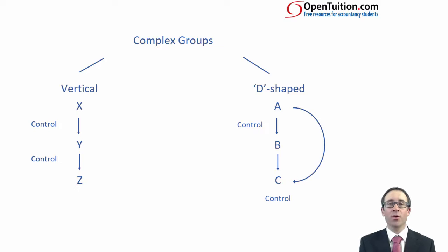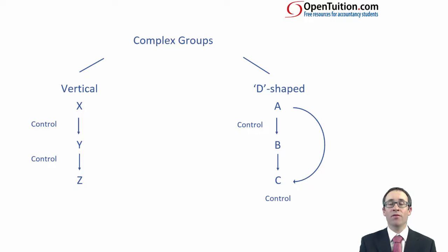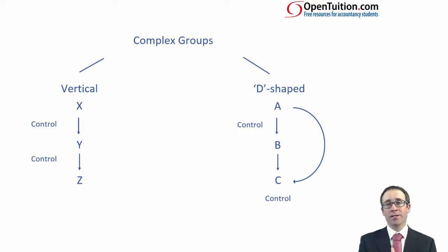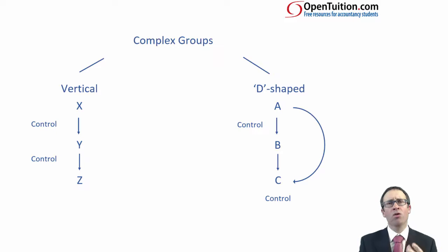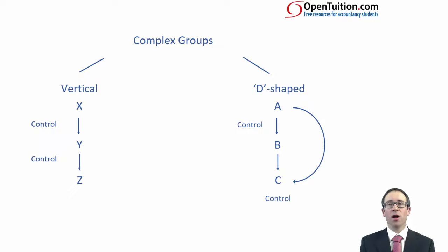Either of these structures can be examined within question one for 35 marks. When being examined on question one for 35 marks, we are just focusing on the group aspects, but individual accounting standards will be tested as well. The focus for now is just on the groups.